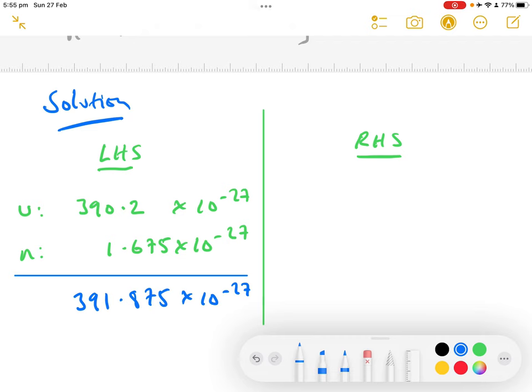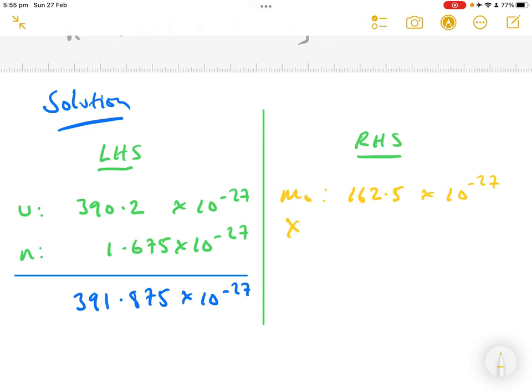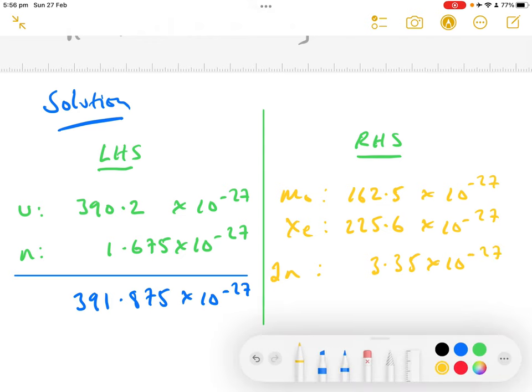Hold all of those significant figures. On the right-hand side then we've got the molybdenum, 162.5 times 10 to the minus 27, the xenon 225.6. Make sure you align the units, the tens, the hundreds, and then we've got two neutrons, remember it's two neutrons, so that's 3.35 times 10 to the minus 27.